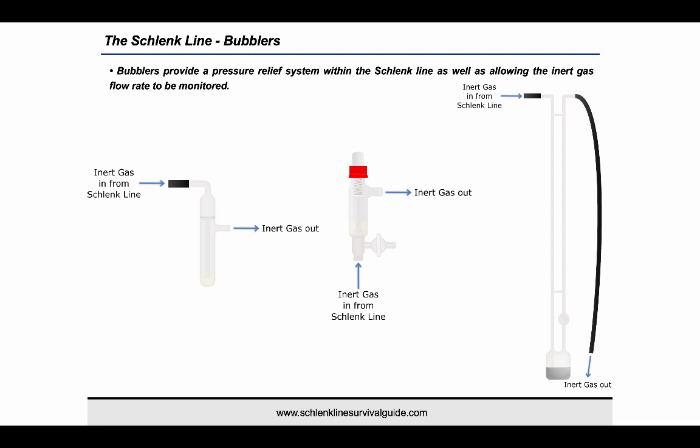The most commonly used bubblers are oil bubblers due to their simplicity and low cost, but they do have their disadvantages, including low working pressures and vulnerability to suck back. Overpressure bubblers, shown in the middle, are designed to prevent oil suck back and to allow higher inert gas pressures to be safely reached and used on the Schlenkline. Mercury bubblers, as shown on the right, can also be used but are now less popular due to health concerns.